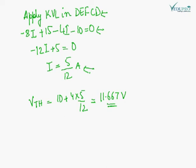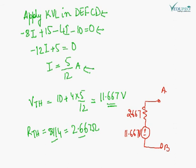Now it's time to calculate RTH. RTH is a parallel combination of 8 and 4. It is coming out to be this. Here this is RTH. RTH is 2.667 and VTH is 11.667V. So this is the Thevenin's equivalent circuit.